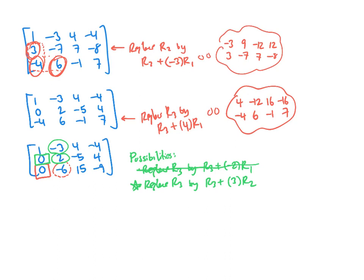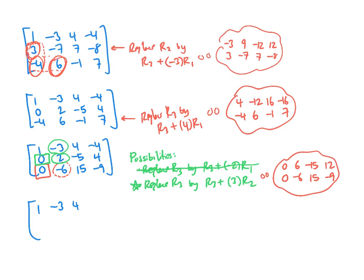So we replace row 3 by row 3 plus 3 times row 2. Three times row 2 is: 0, 6, negative 15, 12. Row 2 is: 0, negative 6, 15, negative 9. Row 1 is unchanged. Row 2 is unchanged. Adding for row 3: 0 plus 0 is 0; 6 plus negative 6 is 0; negative 15 plus 15 is 0; 12 plus negative 9 is 3.